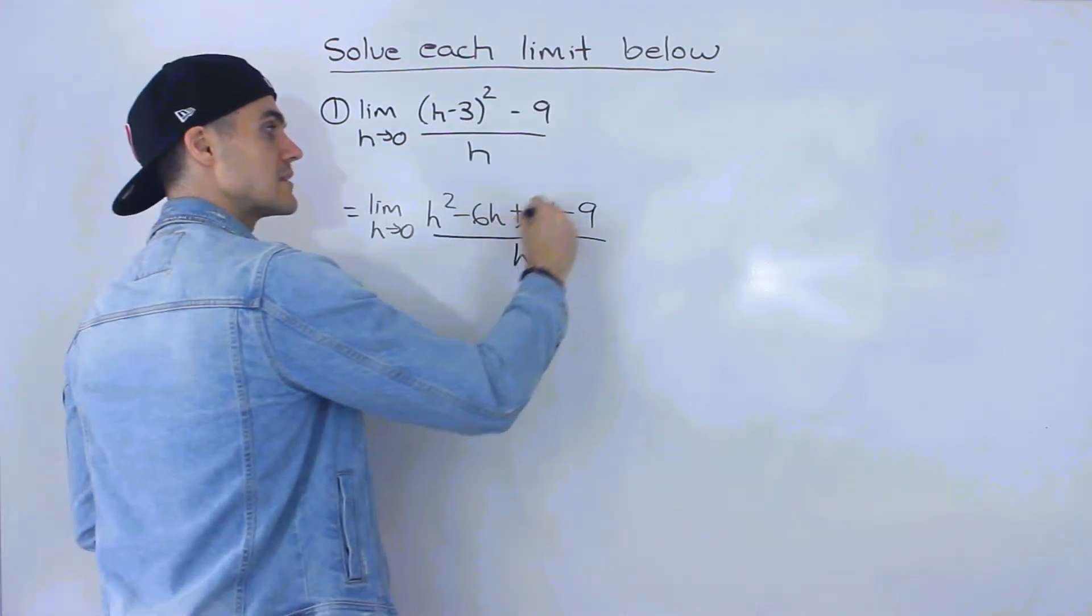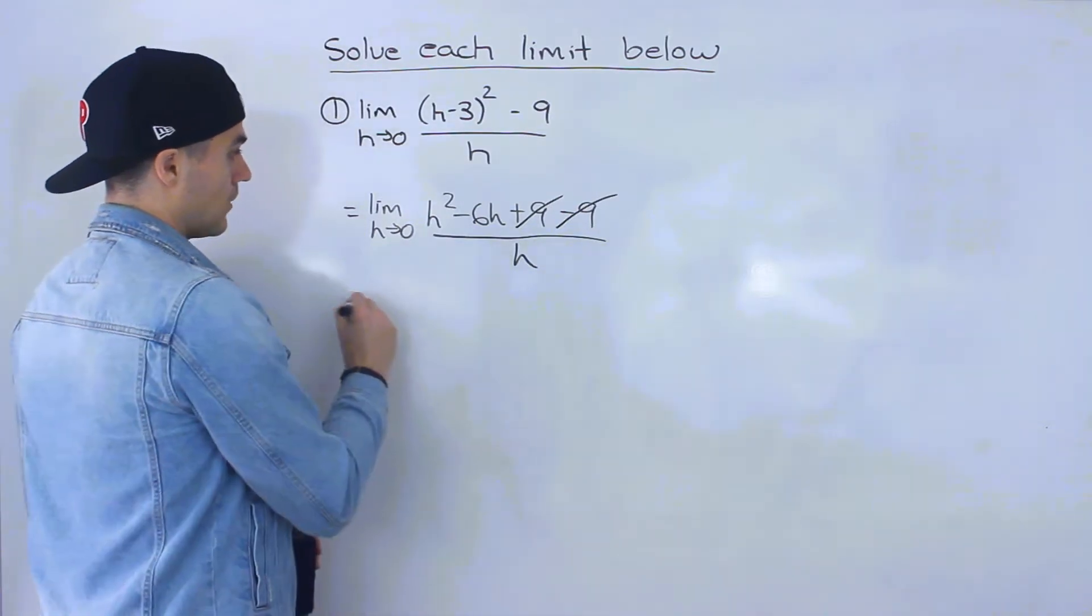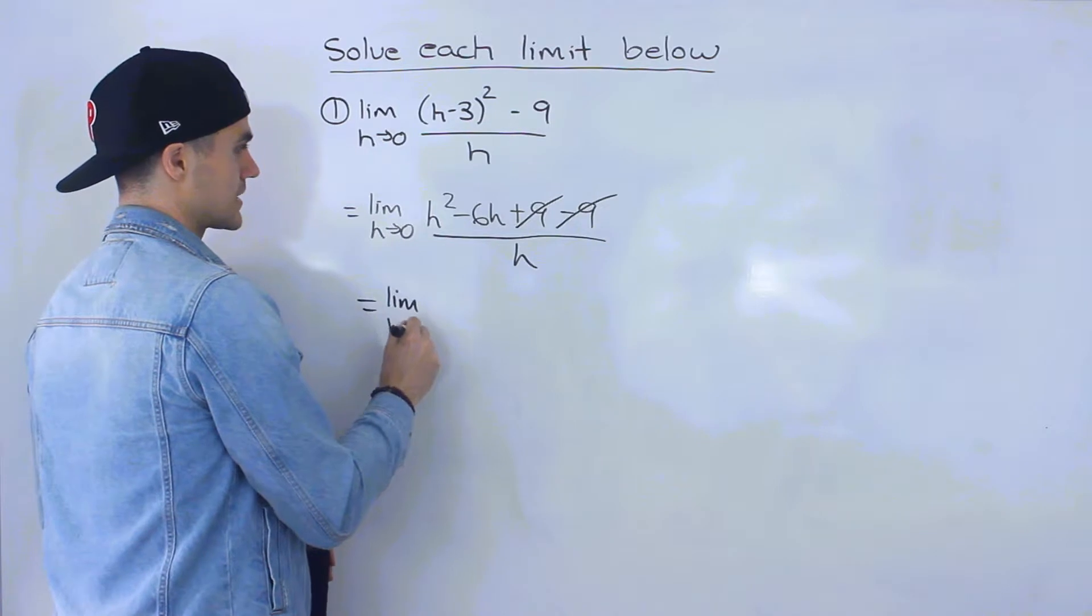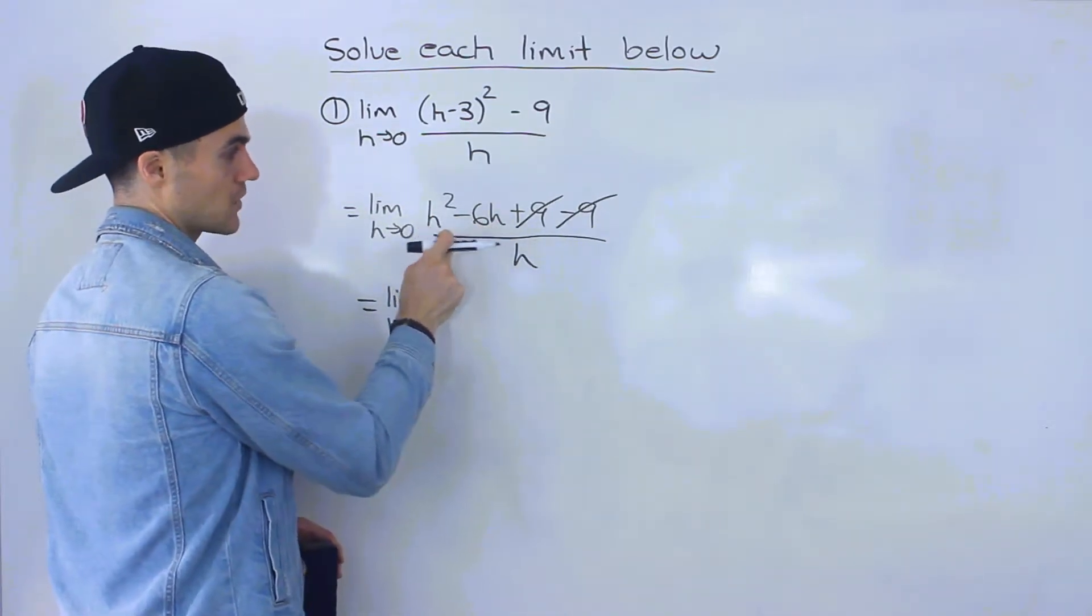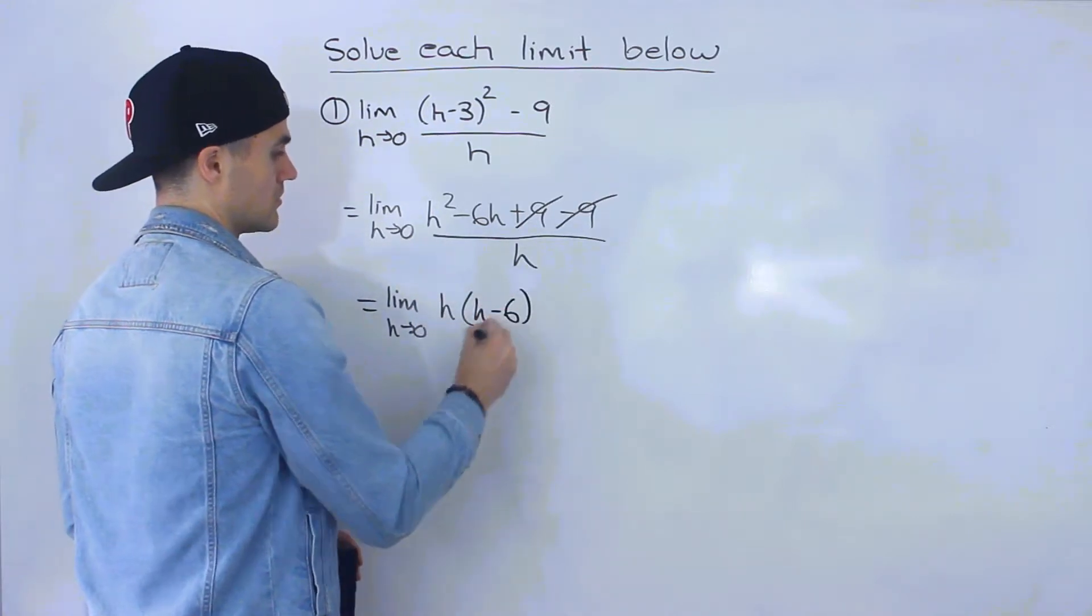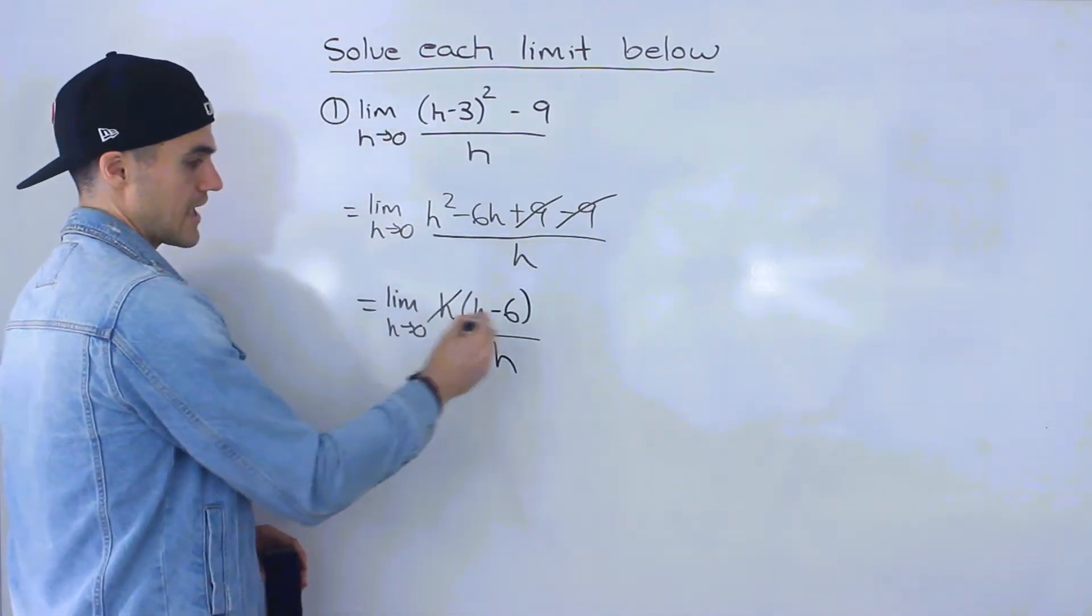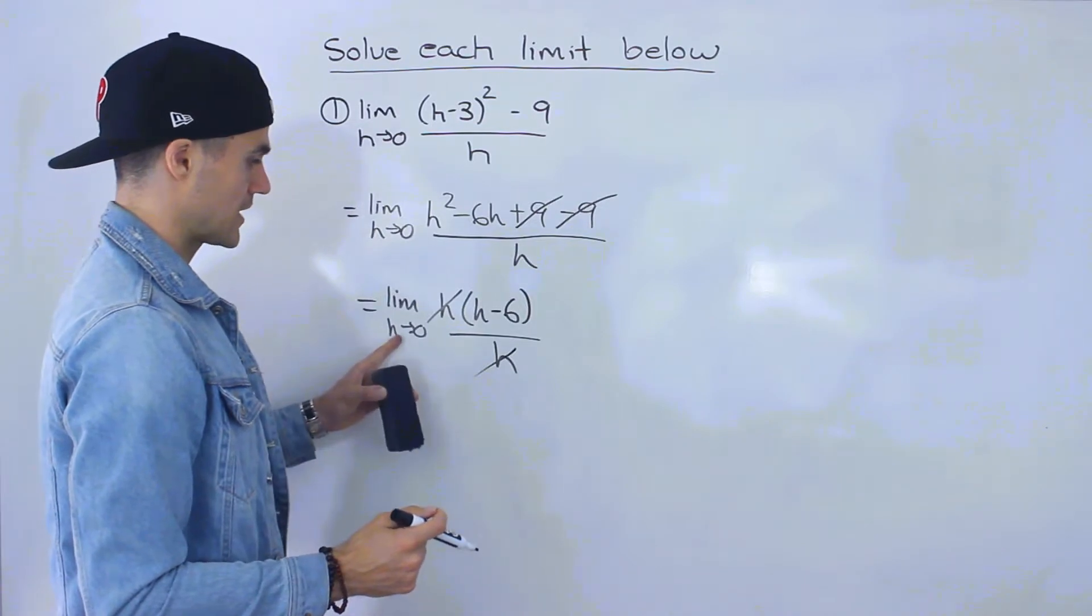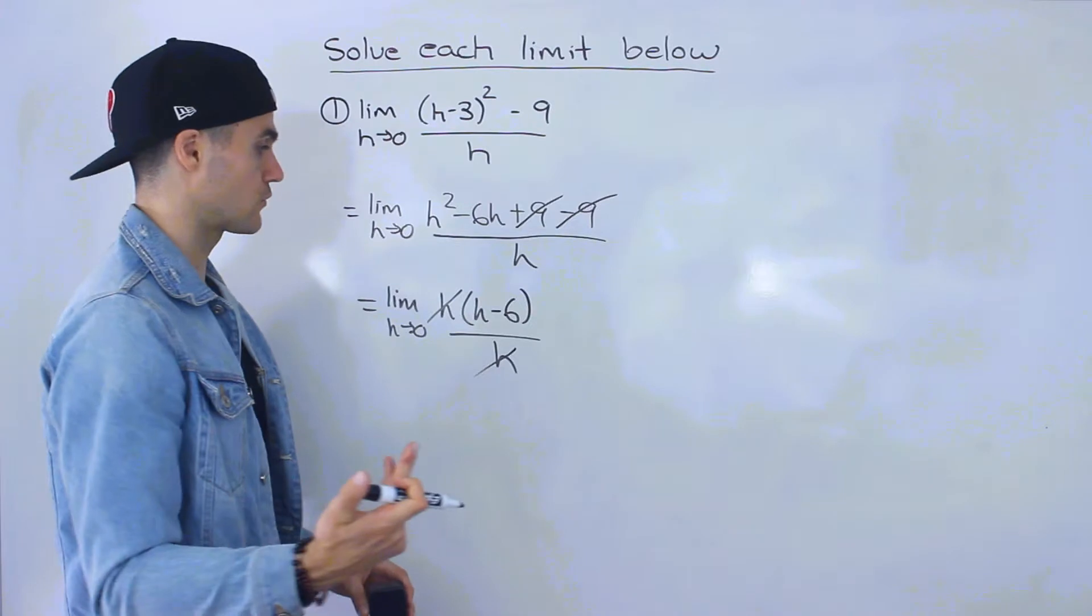So now notice that the positive nine and the negative nine cancel out and now notice that what we can do is we could factor out an h from these two remaining expressions h squared minus six h. So if we take out an h we'd be left with h minus six. This is all over h and now notice the h's can cancel out and we're just left with the limit as h approaches zero of h minus six.